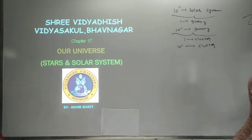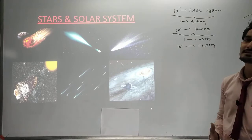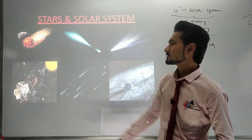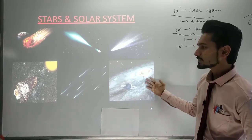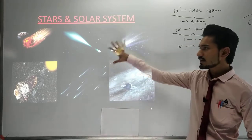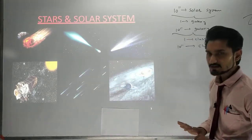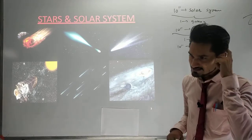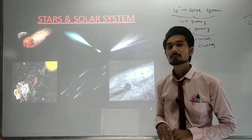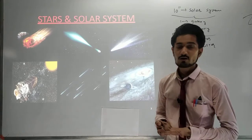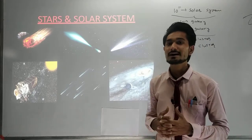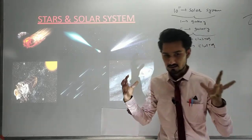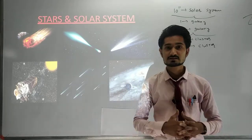Our solar system consists of many things you can see on the screen — like meteors, stars, planets, and artificial satellites. We are going to see all of these things in this chapter and do the study of everything present in our solar system. We are also going to see about black holes, supernovas, how galaxies are made up, and why a galaxy is rotating, revolving, or going on a straight linear path.